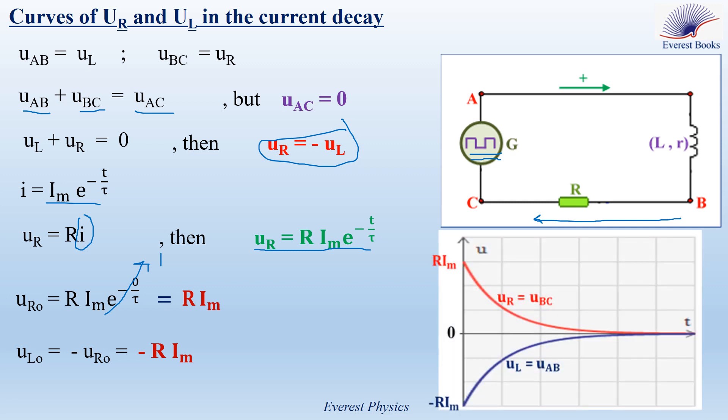As shown in the graph, the red curve represents uR versus time — uR decreases exponentially with time, and at t₀ = 0, uR(0) = +R·Im.